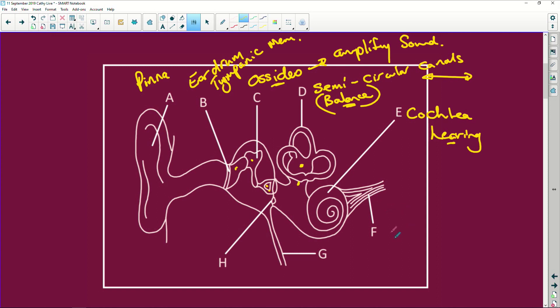This here is your auditory nerve, and that is the guy that goes to the brain. All right. G, ha.